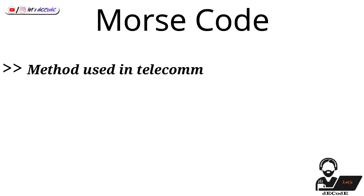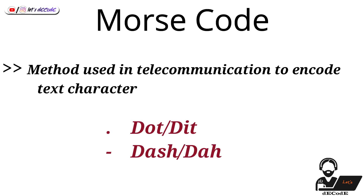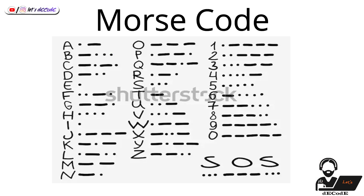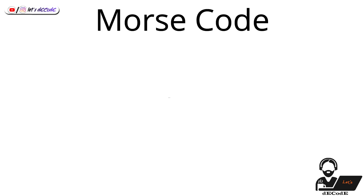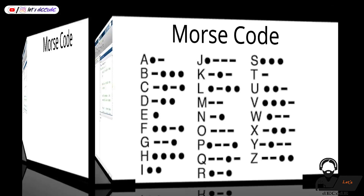Morse code is a method used in telecommunication to encode text characters as standardized sequences of two different signal durations, called dots and dashes or dits and dahs. To increase the efficiency of encoding, Morse code was designed so that the length of each symbol is approximately inverse to the frequency of occurrence of the character it represents in English text. Thus the most common letter in English, the letter E, has the shortest code — a single dot. There is no distinction between upper and lower case letters. Each Morse code symbol is formed by a sequence of dots and dashes.